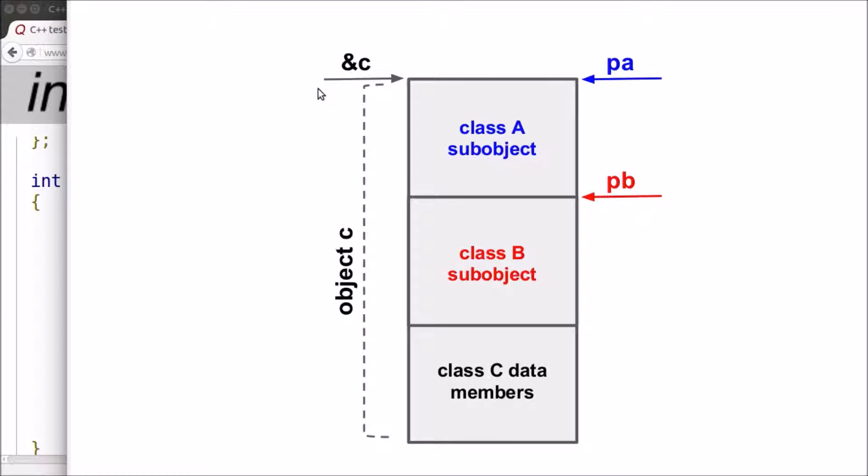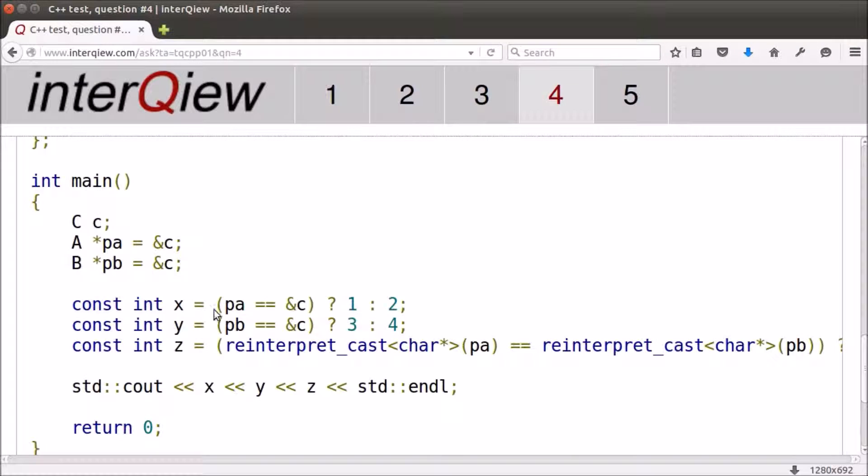Now let's look into the three comparisons in this program. In the first comparison, the address of object C is compared with the pointer of Class A. The address of object C is implicitly converted to the pointer of base class A. Since both pointers point to the same object of Class A, this comparison yields true.